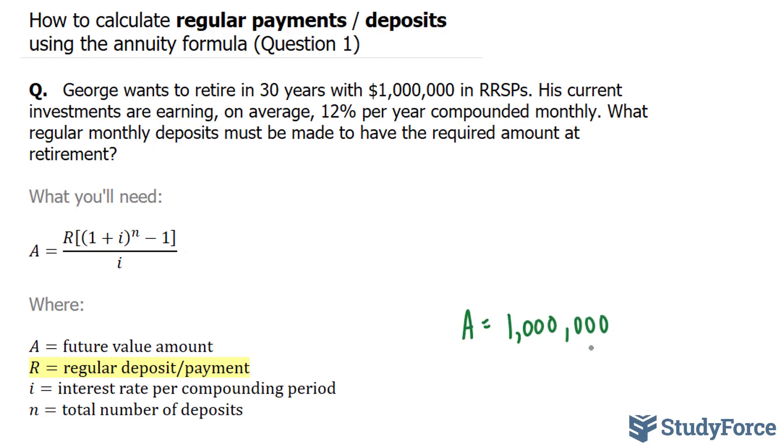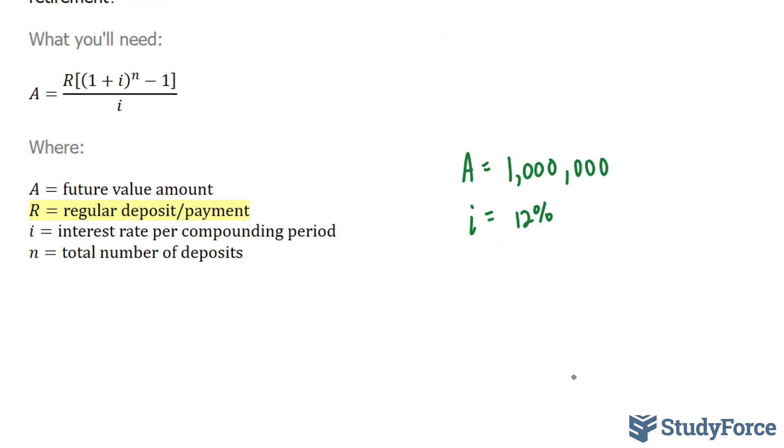Furthermore, we are told that he is earning 12% per year compounded monthly in interest. So his i value is equal to 12%, but notice that it's 12% per year. Now since it's being compounded monthly, we have to take our 12% and divide it by 12, which represents each month of the year, and if we do that, we end up with 1%.